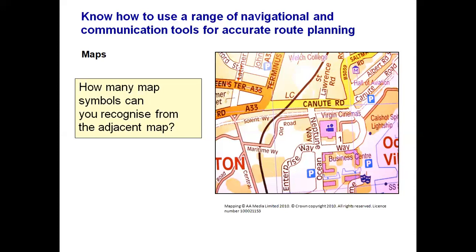Other symbols to watch for: PO means post office, PC means public convenience, and LC means level crossing. In Ordnance Survey maps — regardless of scale, whether 1:25,000 or 1:50,000 — an italicised I is an information centre; a cross like a plus sign indicates a place of worship, whether a mosque, church, chapel, temple or synagogue.